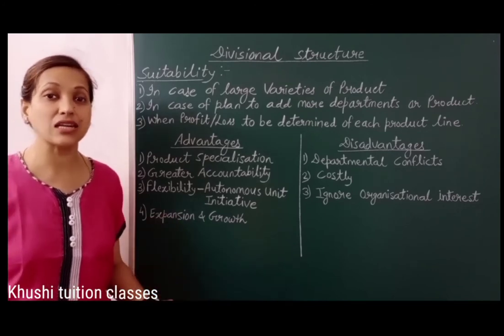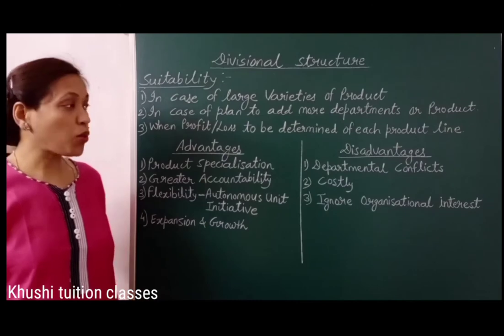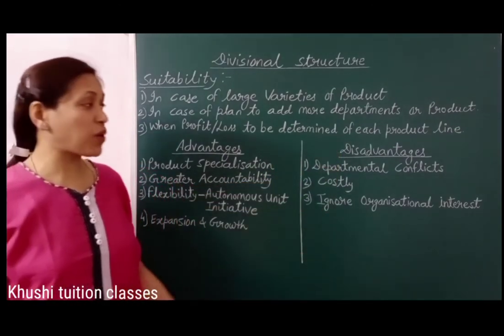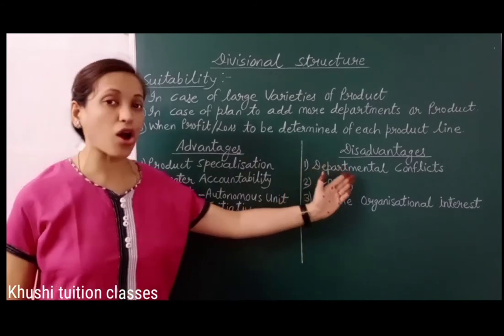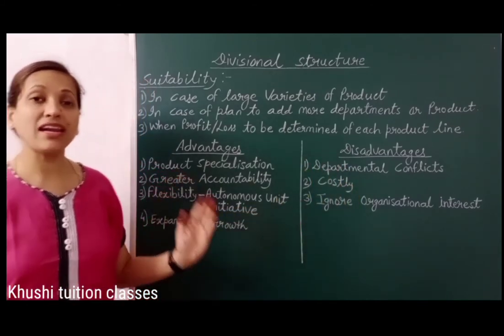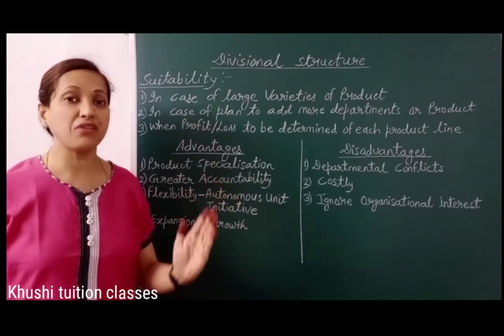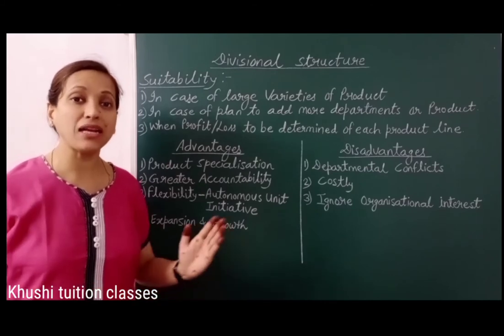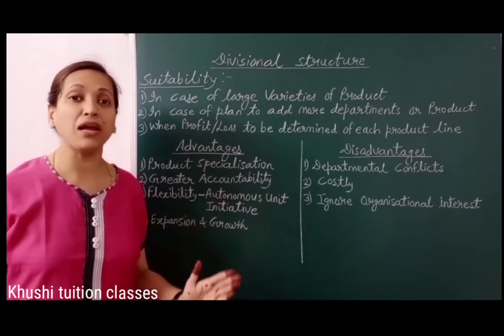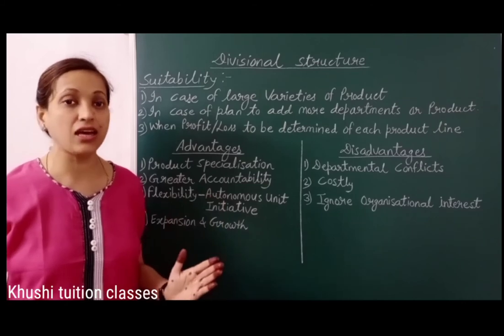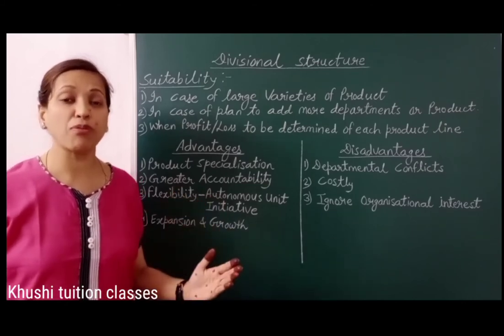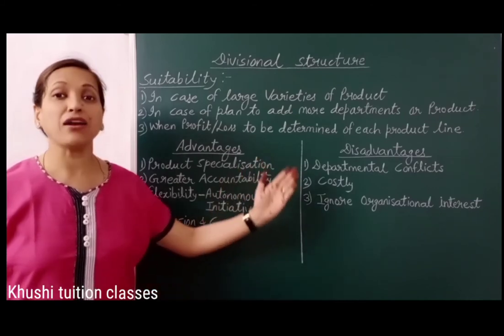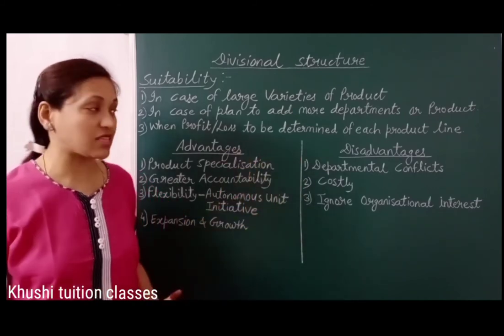Now we see disadvantages of divisional structure. The first disadvantage is departmental conflict. अब top management organization के सभी product divisions को fund allocate करते हैं. लेकिन हर departmental manager अपने department अपनी product line के लिए ज़्यादा funds चाहता है, ताकि उनका scale of operation increase हो, उनका profit increase हो. इसलिए different departments में disputes arise हो सकते हैं.